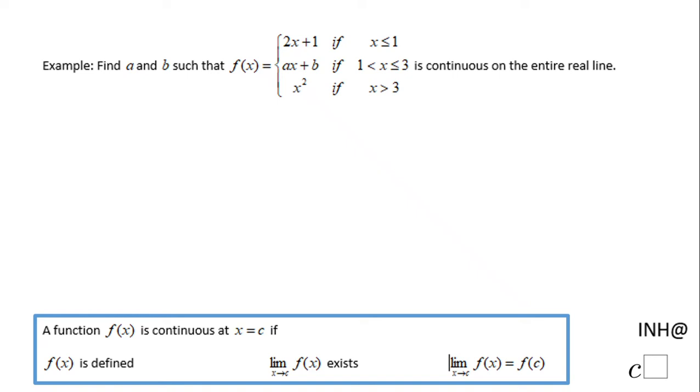Welcome to C Squared. In this example, we need to find a and b such that this function is continuous on the entire real line.